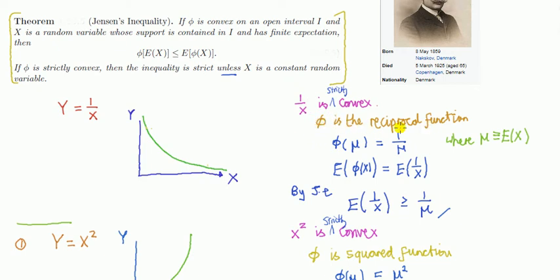φ is the reciprocal function, it just takes X and does 1 over it, or takes the argument and does 1 over it. Let's compute the left and right hand side of this Jensen's, because we know it can apply now, because we've got a convex function.